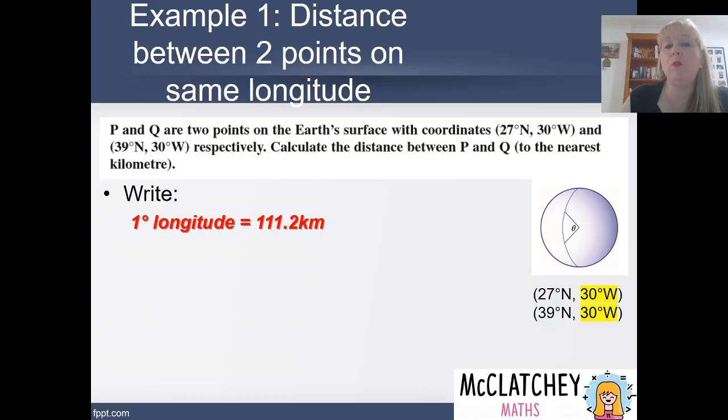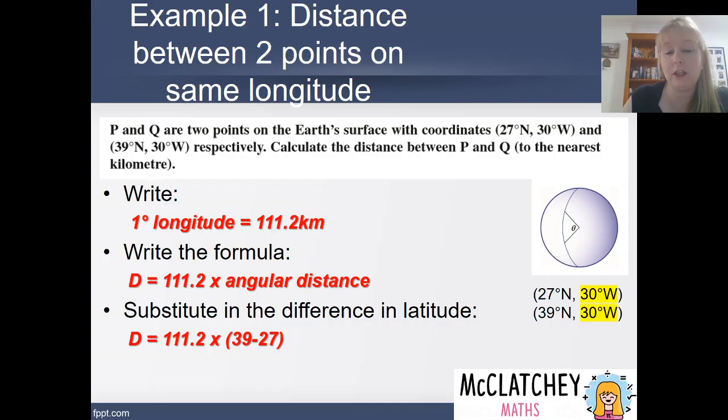Okay, so firstly we know that one degree of longitude is our magic number, 111.2 kilometers. So the distance is going to be 111.2 times that angular distance or the angular difference in the latitude.